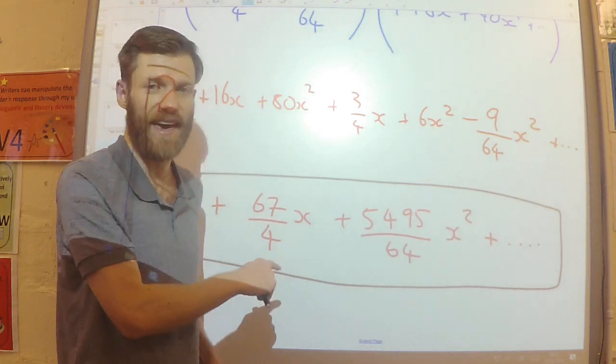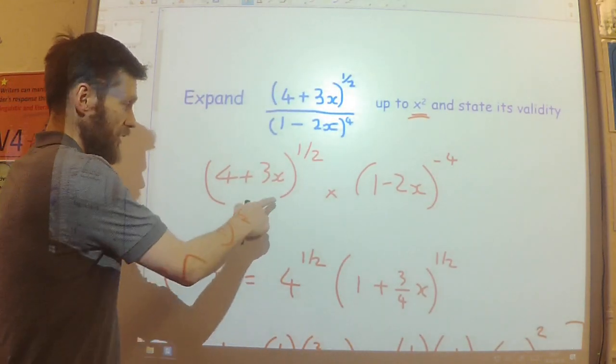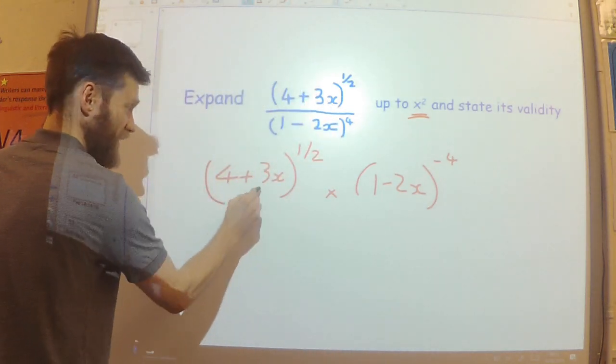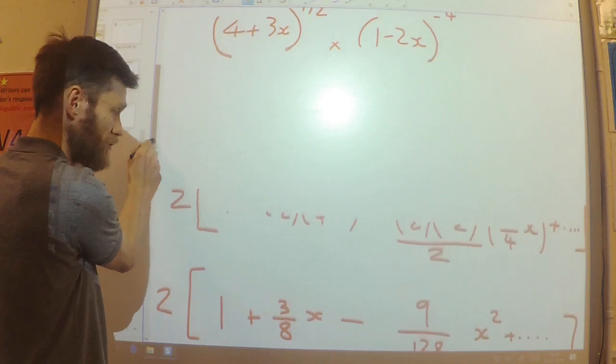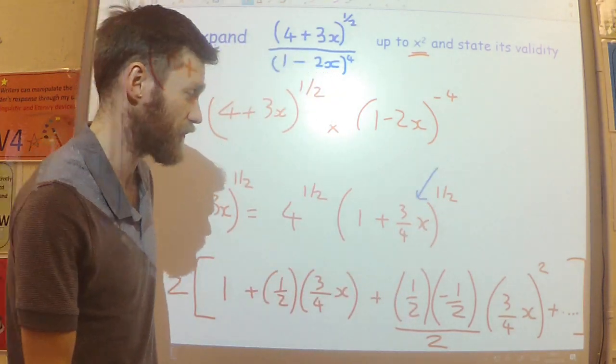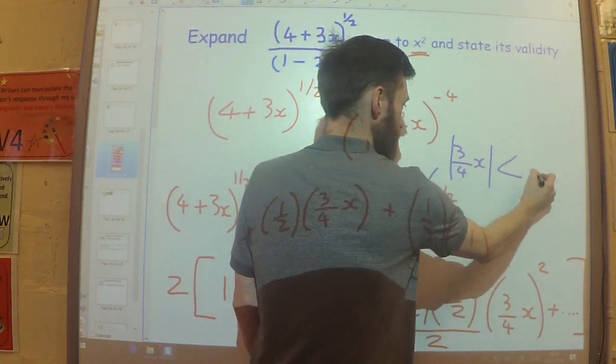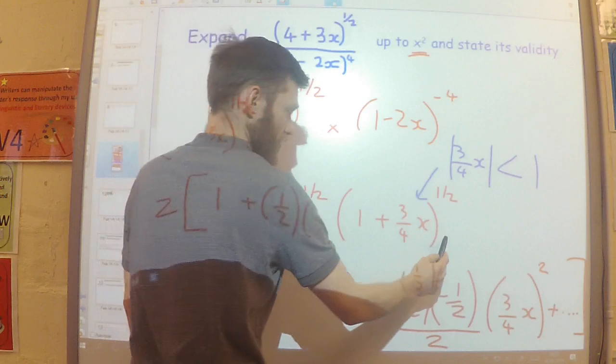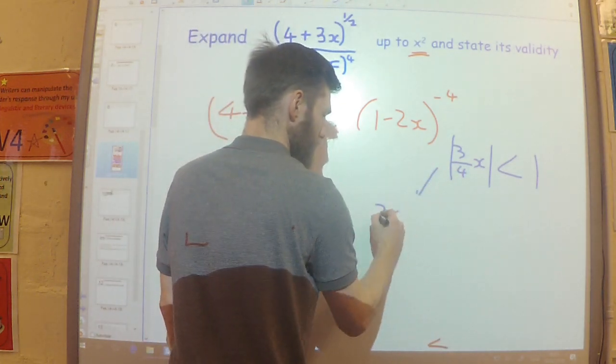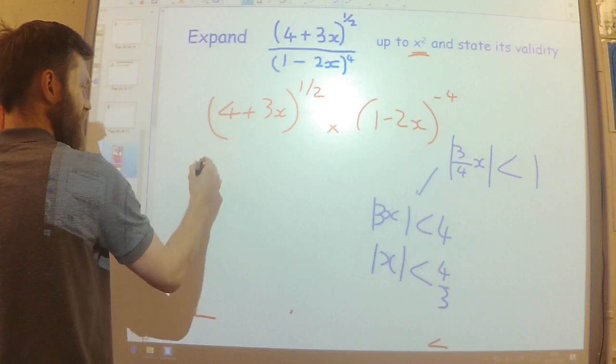I need to determine for what values of x this is valid. So let's go back to the original expansions up here. The expansion for the first binomial is going to be valid when, this is what I used for the expansion. And this term here, the 3 over 4x, the modulus of that has to be less than 1. Which means that 3x has got to be less than 4. So x has got to be less than 4 over 3. That's for this expansion here.